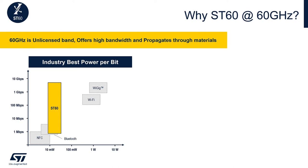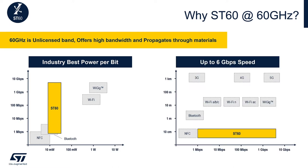The chart on the right compares the range of ST60 device. You can get a range of few millimeters or up to 10 centimeters with small passive antennas. You can see the range is very similar to an NFC but the speeds are much higher.